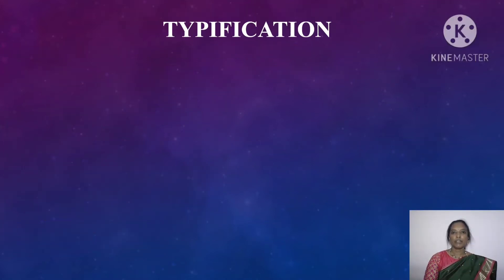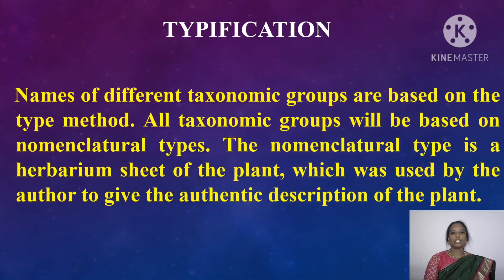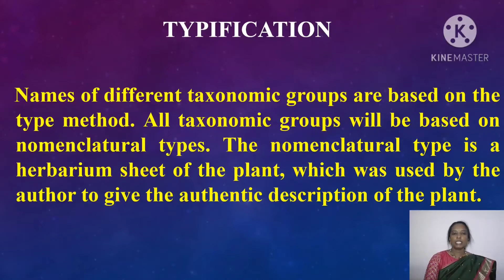Typification. Article 7 of the ICBN code states that the application of names of taxa of the rank of family or below is determined by means of nomenclature type. All taxonomic groups will be based on nomenclature types. The nomenclature type is a herbarium sheet of the plant which was used by the author to give an authentic description. If the specimen cannot be preserved, the type may be a description or figure of the plant. The type of the genus is a species, and the type of the family is a genus.